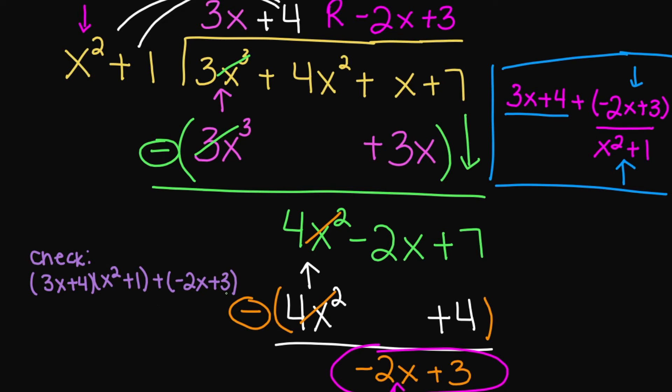To check your work, your quotient times your divisor plus your remainder will take you back to your dividend.